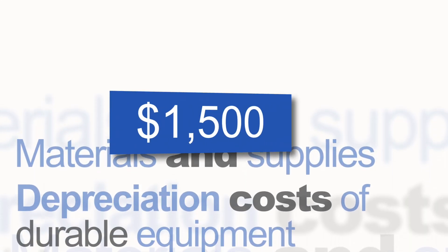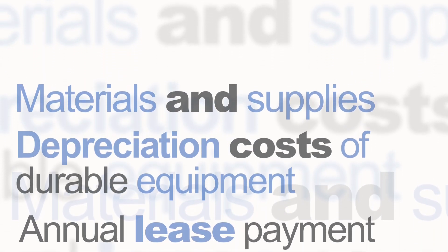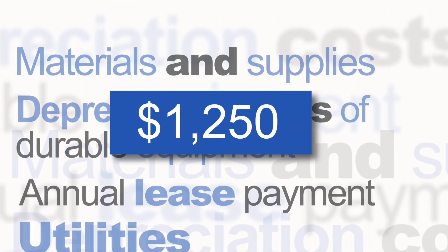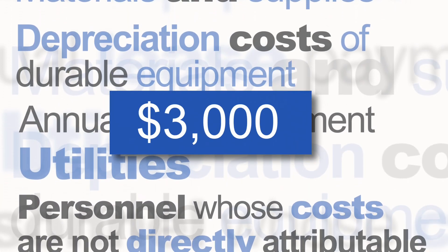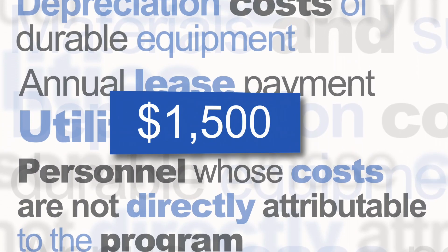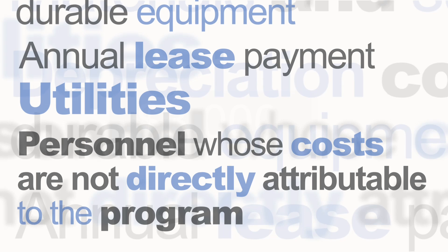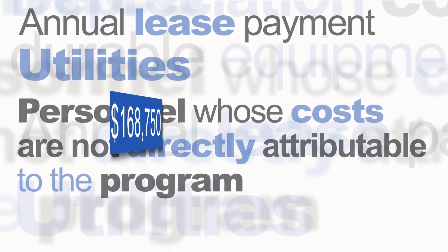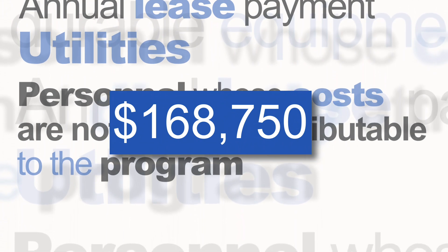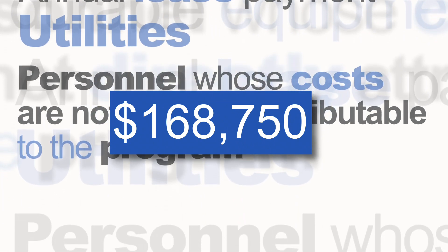Sure. Materials and supplies are $1,500. The depreciation costs of durable equipment is $1,250. The annual lease payment is $3,000. The utilities are $1,500. And personnel whose costs are not directly attributed to the program total $168,750 for salary and fringe. Remember, when doing a cost analysis, you need to take into account the cost of both volunteer and participant time.